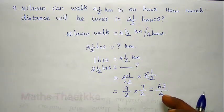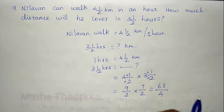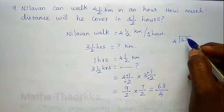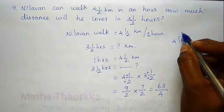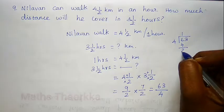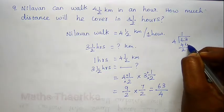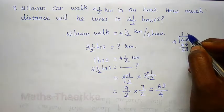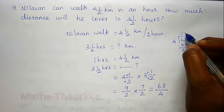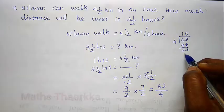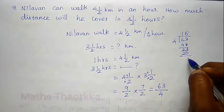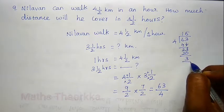Now we divide 63 by 4. 1 × 4 is 4, with remainder. Next, 3 × 4 is 12. Then 5 × 4 is 20, remainder 3. So the divisor is 4, remainder 3, quotient 15.